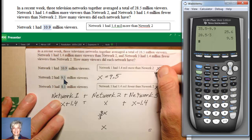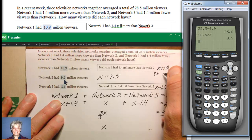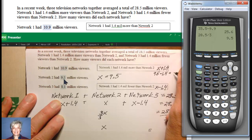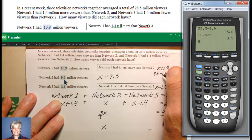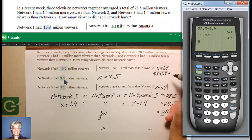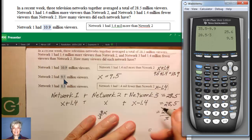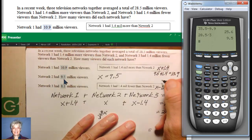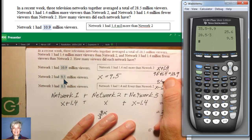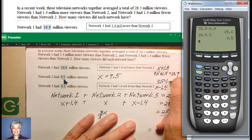Network 3 will be 9.5 minus 1.4, which is 8.1. Network 1 is X plus 1.4, so that's going to be 10.9. And Network 3 will be 9.5 minus 1.4, which is 8.1.